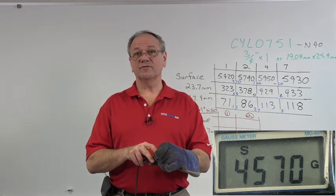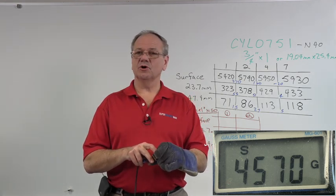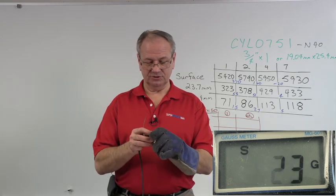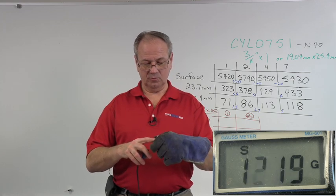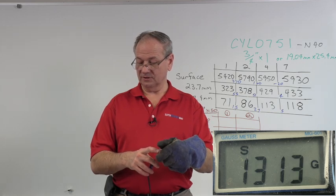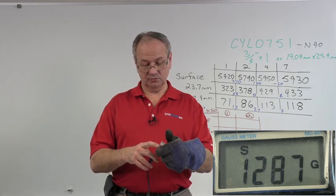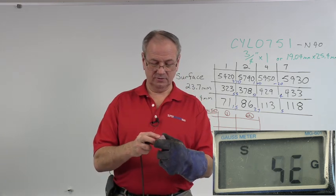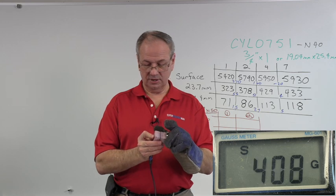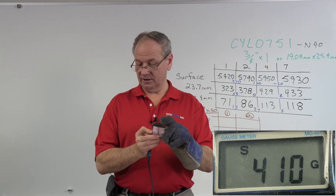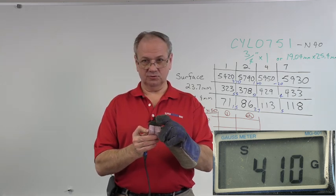We see that it's only 4570 gauss on the surface, which is a little bit less than what we were getting with the other one. But when we add that 23.7 millimeter spacer, we're now getting 1320 gauss. When I put two of these for 47 millimeter thickness, notice that it goes to 410 gauss with that spacer in between it.